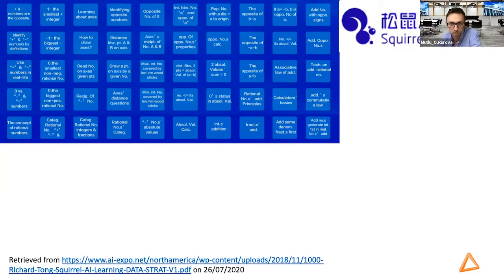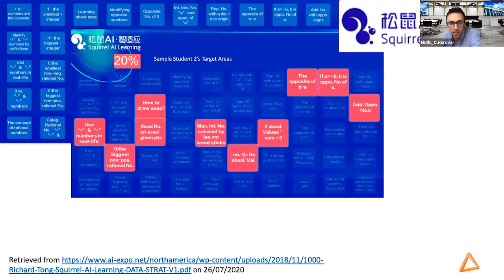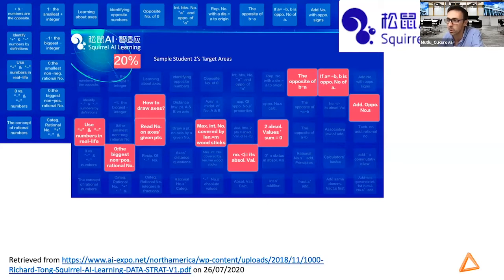Knowledge space theory, item response theory, and other available AI techniques that help us computationally build what the domain looks like are utilized to create a content graph — in this case for mathematics. You can see examples of knowledge points all related to each other in a multidimensional space. Using techniques like Bayesian knowledge tracing, the system models each learner's mastery of particular knowledge content, treating student knowledge as a latent variable and observing performance on questions or activities provided on the platform.